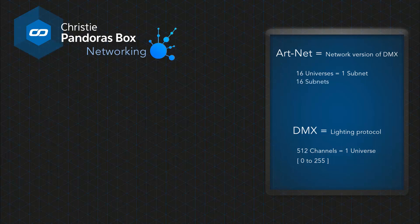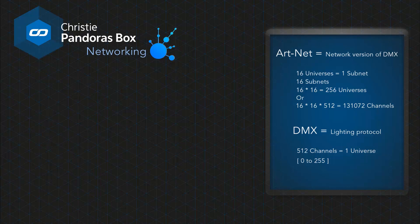This makes a total of 16 times 16, or 256 universes — or 16 times 16 times 512, which equals 131,072 channels. While the protocol itself allows for 16 subnets with 16 universes, in practice networks are limited to a smaller number, mainly depending on their network speed.